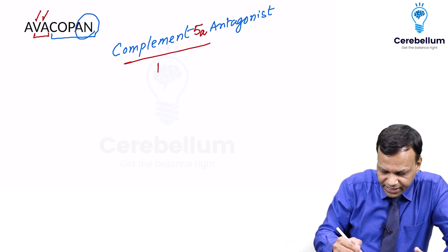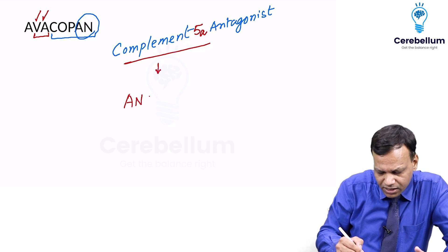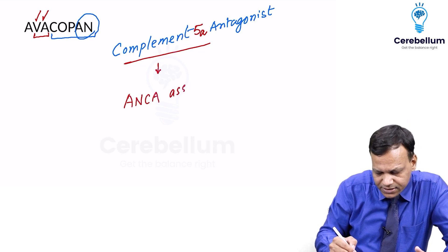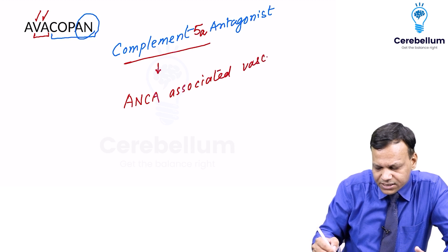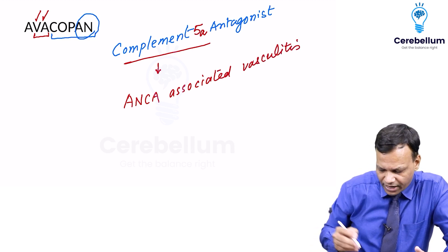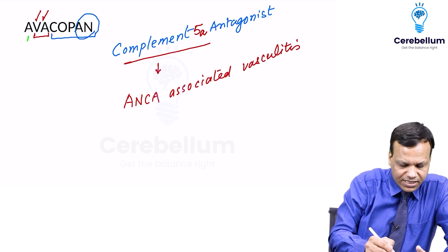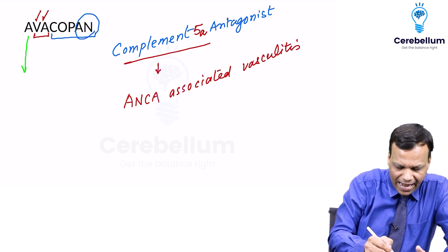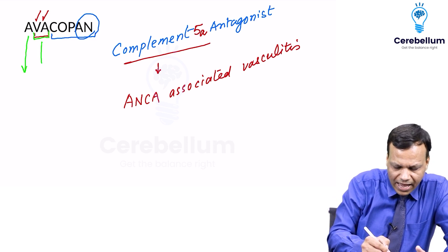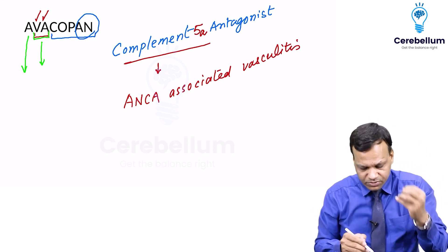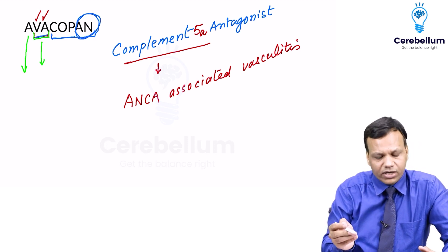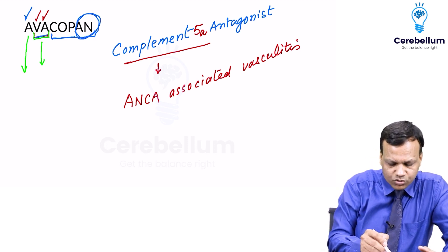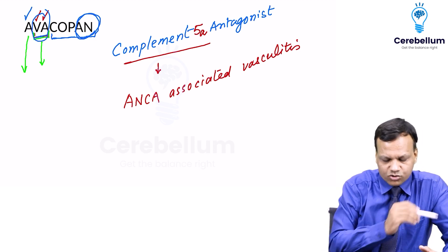It is indicated in ANCA-associated vasculitis. From the name, you can remember: it is a complement antagonist, 'VA' means 5A antagonist, and it is used for ANCA-associated vasculitis. The name says everything.